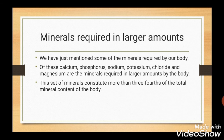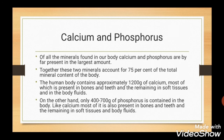Let's start with minerals required in larger amounts. These are calcium, phosphorus, sodium, potassium, chloride and magnesium, which are required in larger amounts by the body. We will discuss each one separately in detail. These minerals constitute more than three-fourths of the total mineral content of the body. Calcium and phosphorus, as compared to other minerals in our body, are present in the largest amount — they account for 75% of total mineral content of the body.